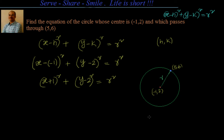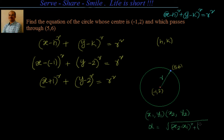So let's write it down. We will use the formula: if x1 comma y1 and x2 comma y2 are two points, then the distance between them is given by the square root of x2 minus x1 whole square plus y2 minus y1 whole square. Or we can say d square equal to x2 minus x1 whole square plus y2 minus y1 whole square. We will apply that formula here.